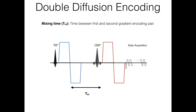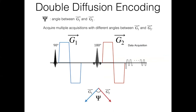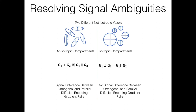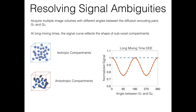In double diffusion encoding, key parameters include the time between encoding blocks and the angle between the two diffusion encoding gradient pairs. When you have anisotropic versus isotropic components, the signal difference between orthogonal and parallel gradient pairs is unequal for anisotropic components but equal for isotropic ones. If you acquire multiple images varying the angle between encoding pairs at long mixing times, that signal curve reflects the shape of subvoxel compartments — the red curve shows modulation evidence of anisotropic compartments absent in isotropic ones.